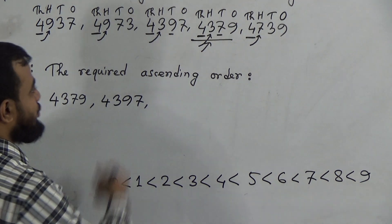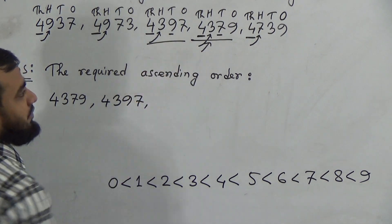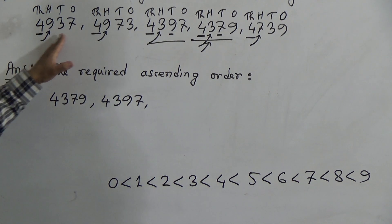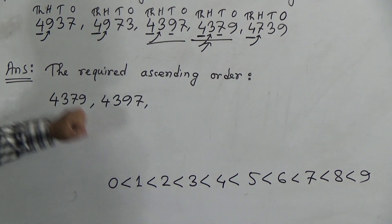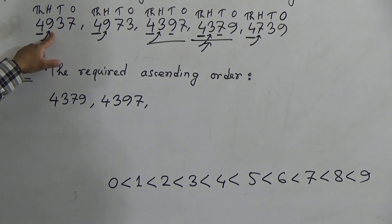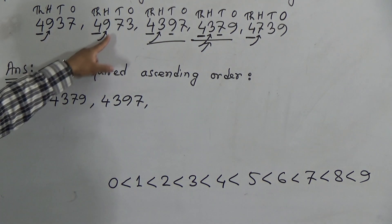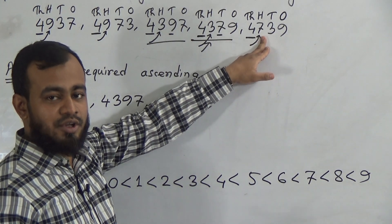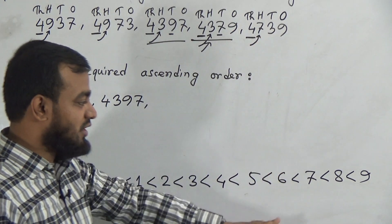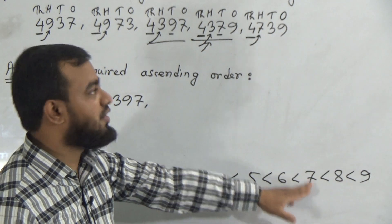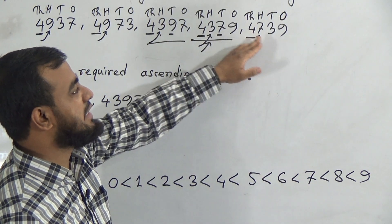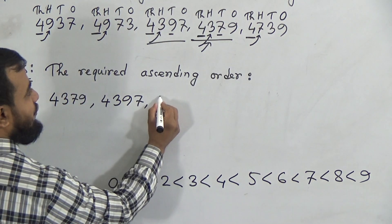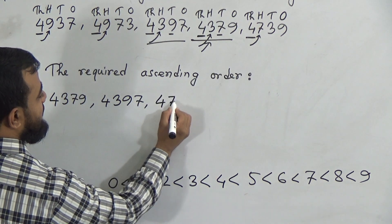These two numbers are already done. Now we need to find the next smallest number from the remaining three. In the 100's place, we have 9, 9, and 7. So 7 is the smallest number, and we should write down this number in the third place. That means 4,739 will be our next smallest number.